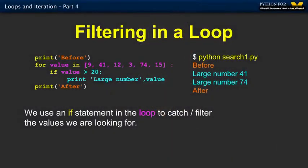Now, filtering is the idea that we're looking for something that meets some criterion. We're going to go through and look at all the things in the loop, and we're trying to figure out if something is greater than 20, and we're going to declare that a large number. This is how you put an if inside a loop. Sometimes this loop will do nothing; sometimes it will print out 'large number'. So value's going to be nine — that's false, so it does nothing. Value's 41 — that's true, so it prints out this. Value's 12, does nothing. Value's three, does nothing. Value's 74, prints this out. Value's 15 — that's false.